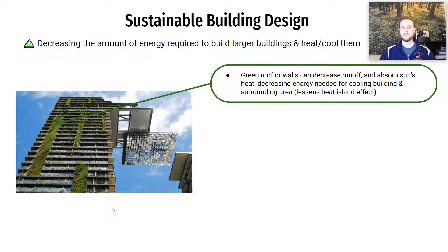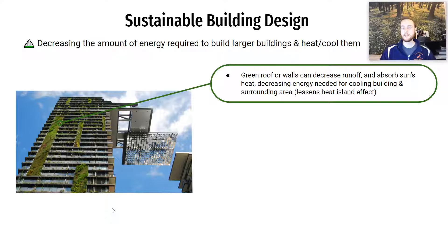A green roof provides air quality benefits and sequesters a little carbon dioxide, but the real benefit is from an electricity standpoint. The plants absorb a lot of sunlight, which heats the building less, so it uses less electricity for air conditioning. It can also impact surrounding buildings by decreasing the urban heat island effect — the idea that dark surfaces like blacktop, asphalt, and concrete absorb the sun's heat. Replacing them with plants reflects that heat instead and decreases electricity use.